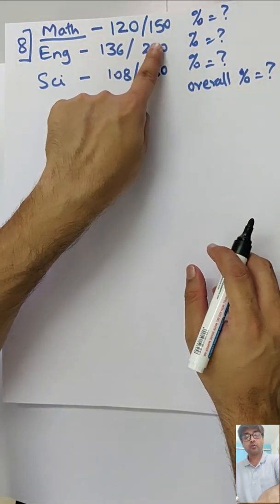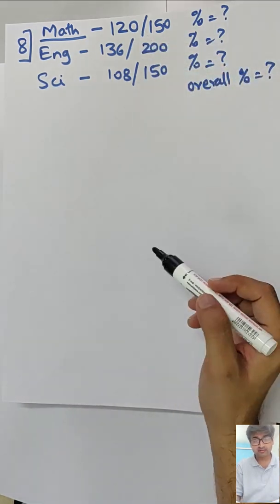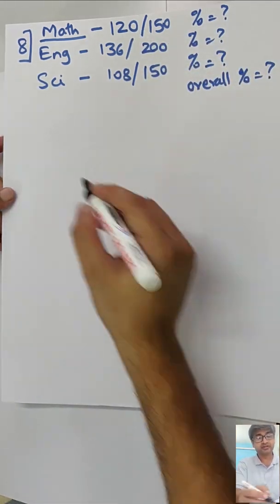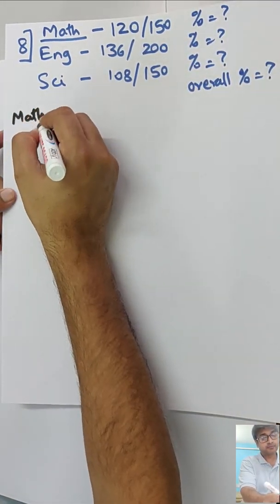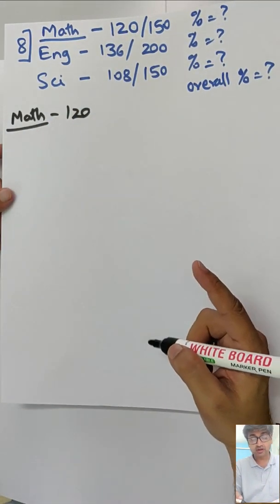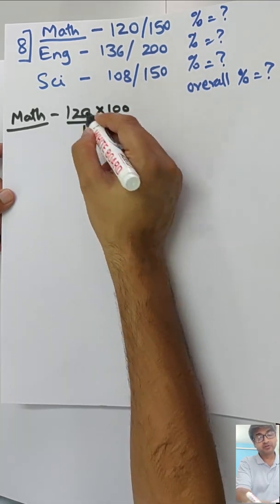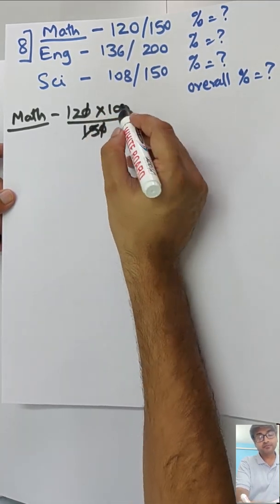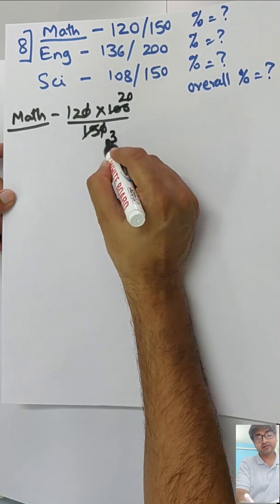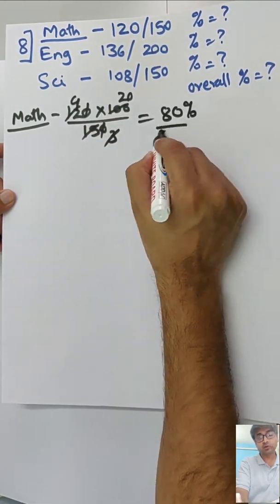Let's go to the next one, sum number 8. It is comparatively simple. In maths out of 150 someone has scored 120, English and science, get percent of each subject and then overall percent. First let's get for math. For math 120, you're finding percent, therefore you're going to multiply by 100 out of 150. So 80% marks have been scored in maths.